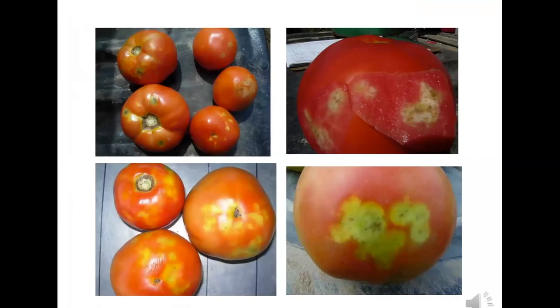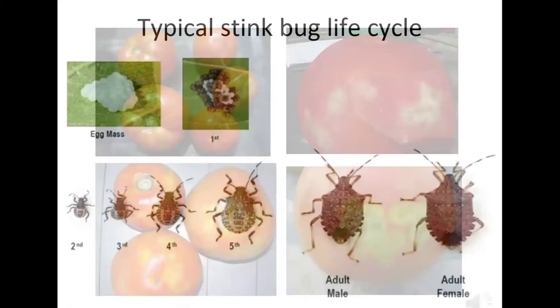Tomatoes are definitely one crop that stink bugs will attack. It's possible you didn't even see them out there, but you see their damage — maybe before you even realize they've found the crop. They'll start feeding when the fruit is still green and developing, and when it ripens, you get these ugly marks from where their stylets were inserted.